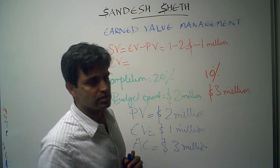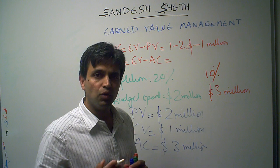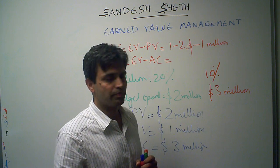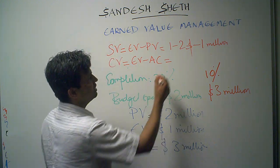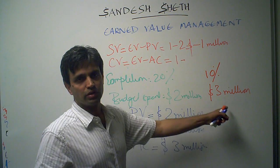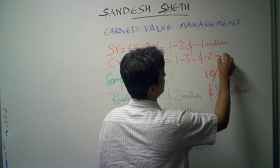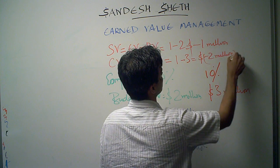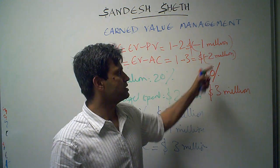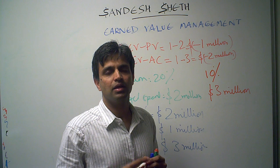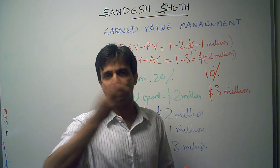Cost variance is defined as earned value minus actual cost. My earned value is $1 million and my actual cost is $3 million, so my cost variance is minus $2 million. The minus sign implies I am lagging behind.